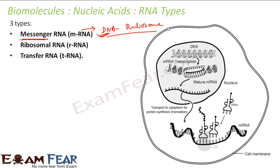So messenger RNA is the link between nucleic acids and amino acids. The process of translation of codons into amino acids requires other types of RNA. The ribosomes create proteins, and the transfer RNA comes into picture to recognize that pattern and provide the corresponding amino acids.